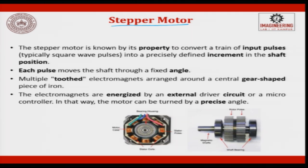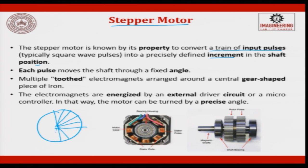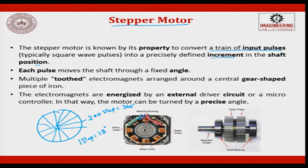The stepper motor converts a train of input pulses (square pulses) into precisely defined incremental steps in shaft position. For one rotation, 200 steps are typically given for 360 degrees, so one step controls 1.8 degrees. The step size can be reduced or increased (quarter, half, or multiple) by adjusting the hardware. Multiple toothed electromagnets are arranged around a central gear-shaped piece of iron, energized by an external driving circuit or microcontroller, allowing the motor to turn by a precise angle.